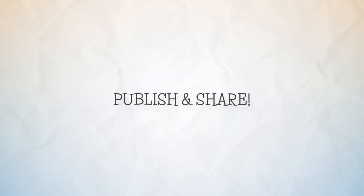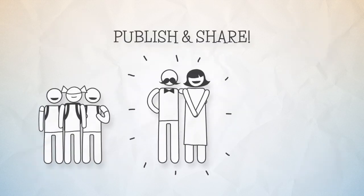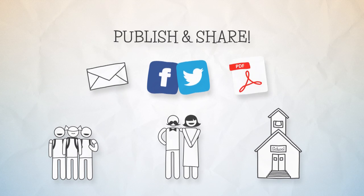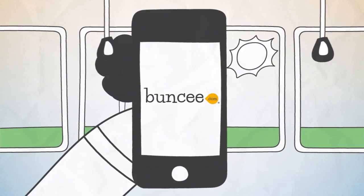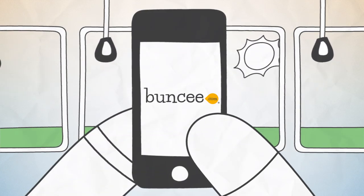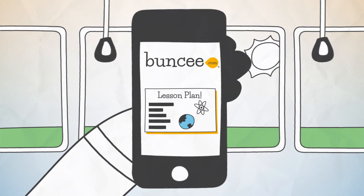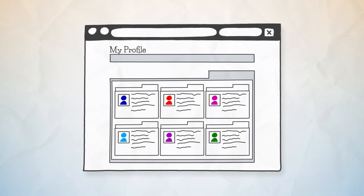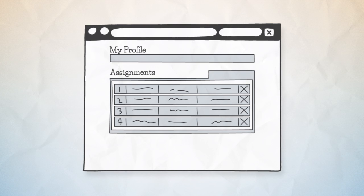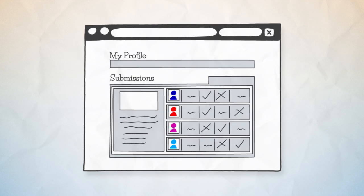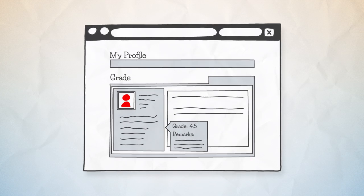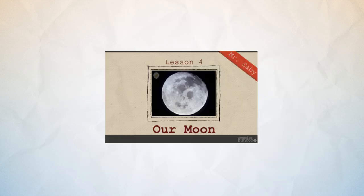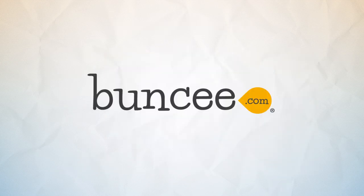Then publish and share with your students, parents or your community via email, social media or clickable PDF. Buncee looks great on mobile devices too, so students can review their lessons anywhere. Your subscription lets you and your students play with Buncee, and you get an easy to use dashboard for assignments, checking work and grading. Sign up, get started and get your students engaged on Buncee.com today.